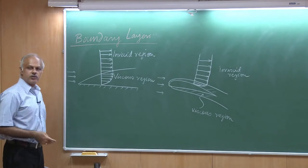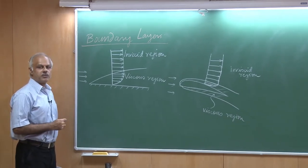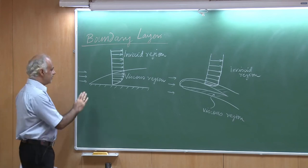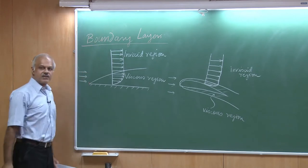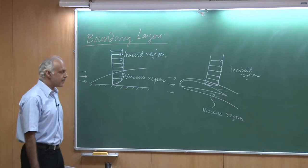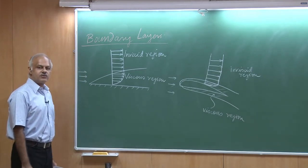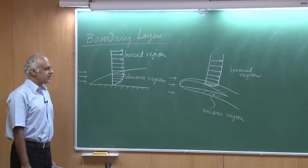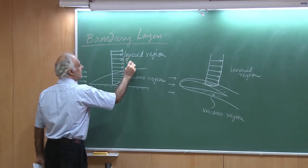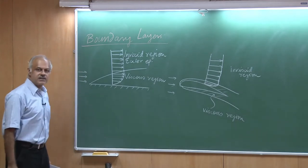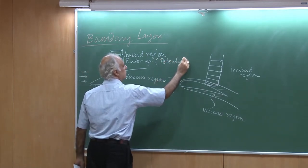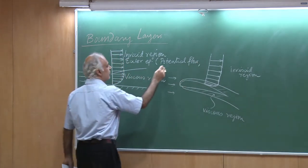To analyze these flows, there are really two options. Option one is to take the full Navier-Stokes equations, apply boundary conditions — velocity is zero at the wall, free-stream conditions far away — and solve. But the Navier-Stokes equations are complex and difficult to solve. The engineering solution is to split the problem into two smaller problems: model the inviscid region by the Euler equations, which can be simplified to potential flows if the flow is irrotational.